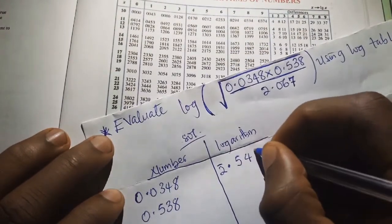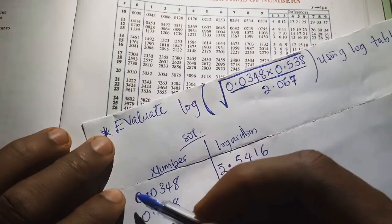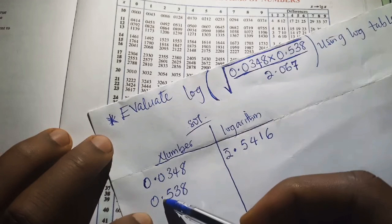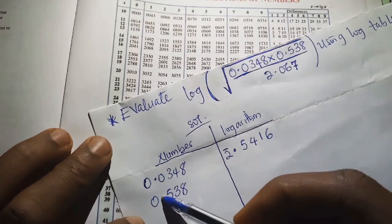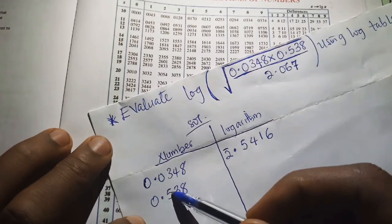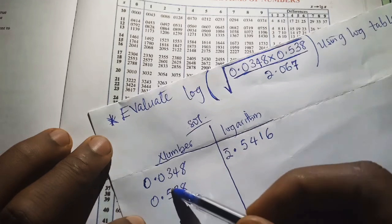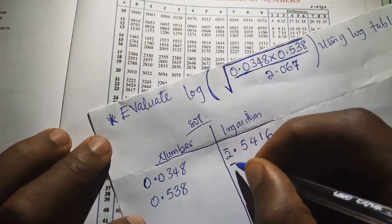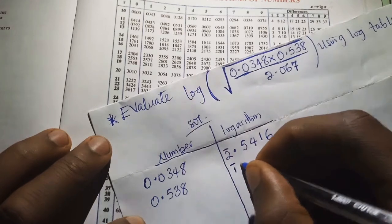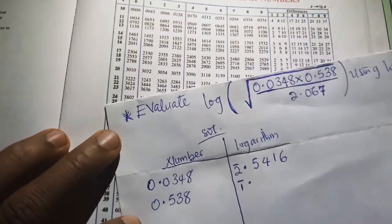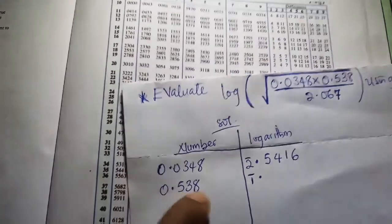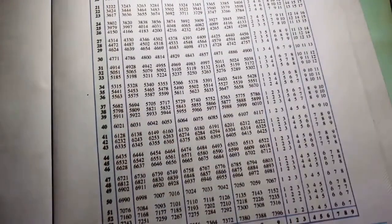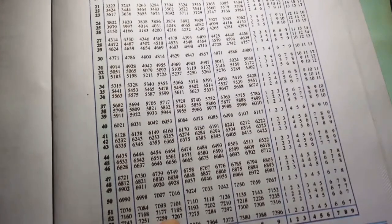We write 5416 as the mantissa for the first number. For the second number, 0.538, we move the decimal point to the first significant figure giving 5.38 — moved only once — so the characteristic is negative one. We write the point, then trace the number in the log table using 53 under the column for 8.